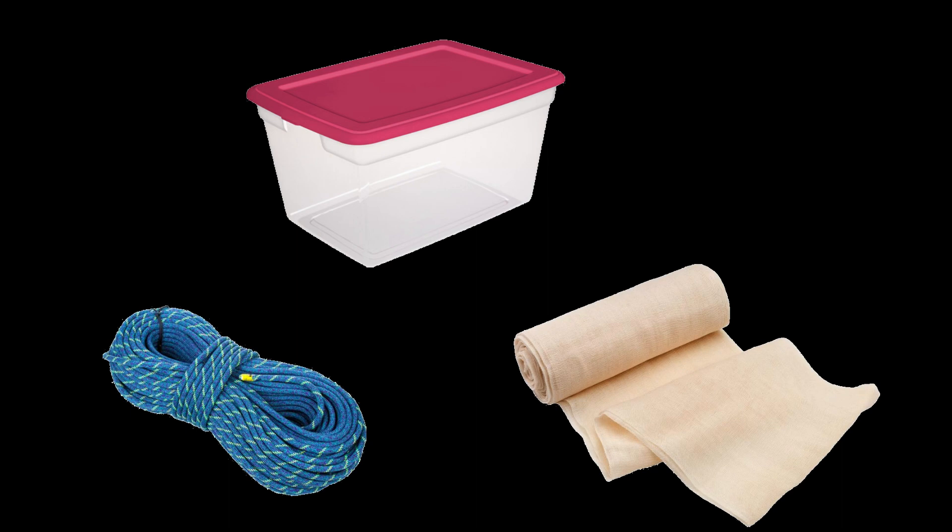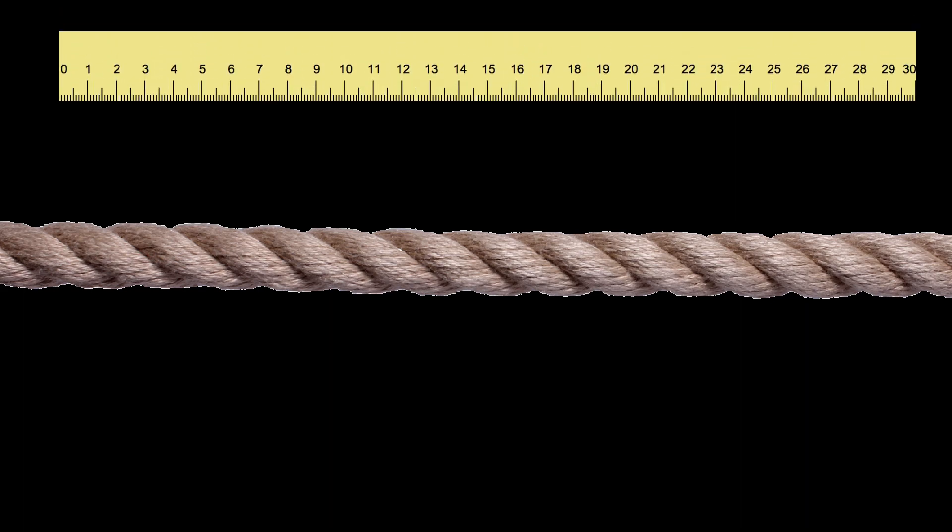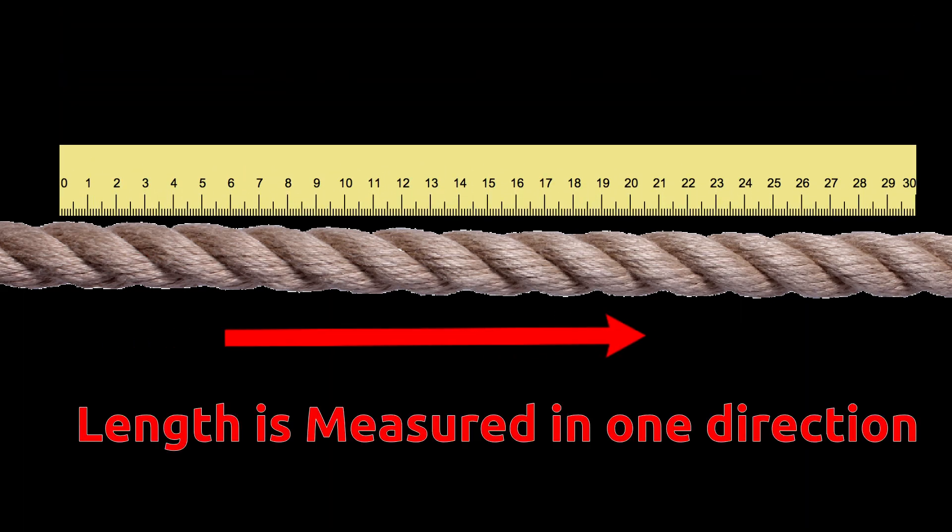When you buy rope, generally you tell shopkeeper to give 1 meter or 2 meter long rope. Shopkeeper measures the rope only in one direction. Length of an object is always measured in one direction.